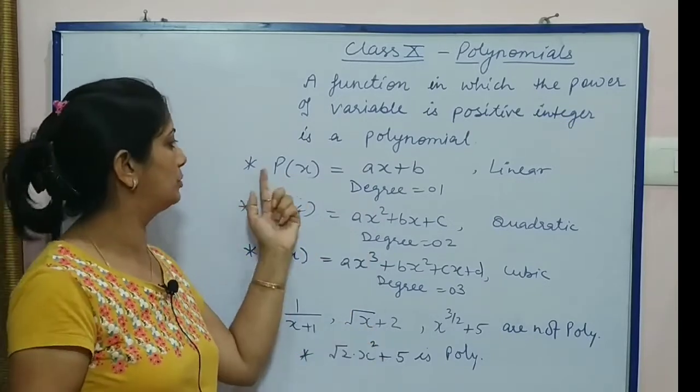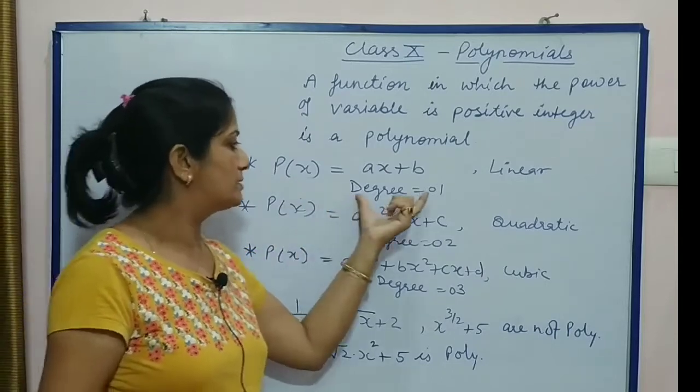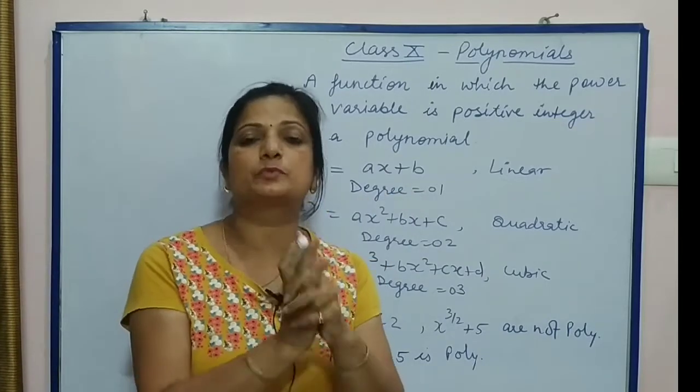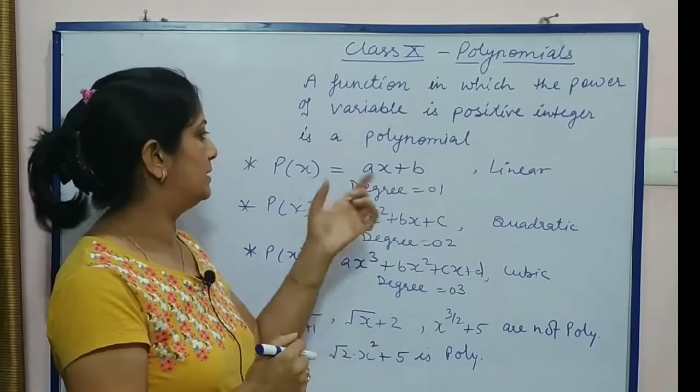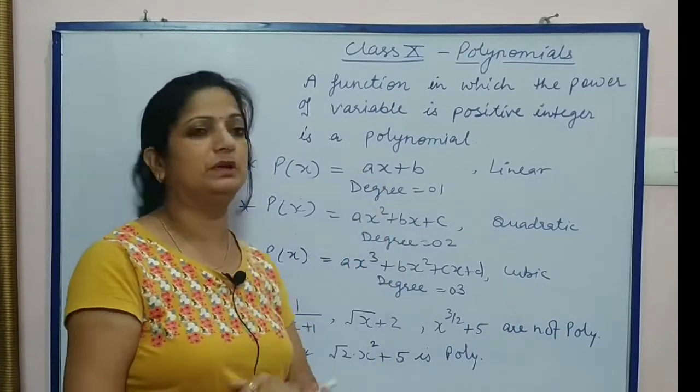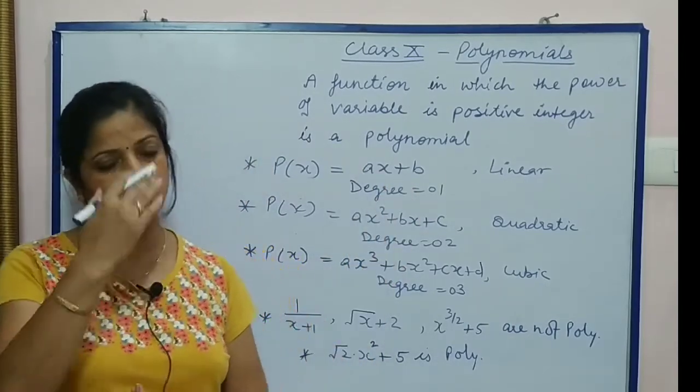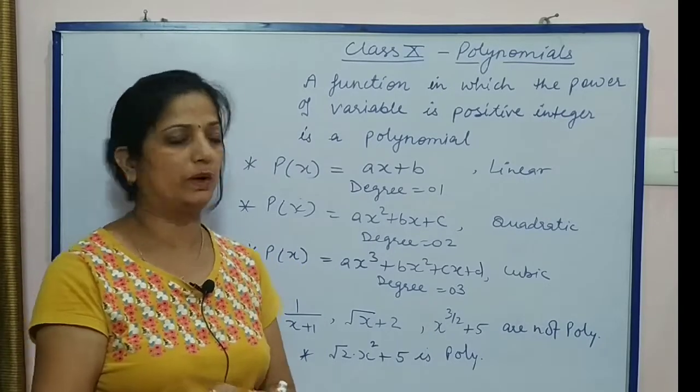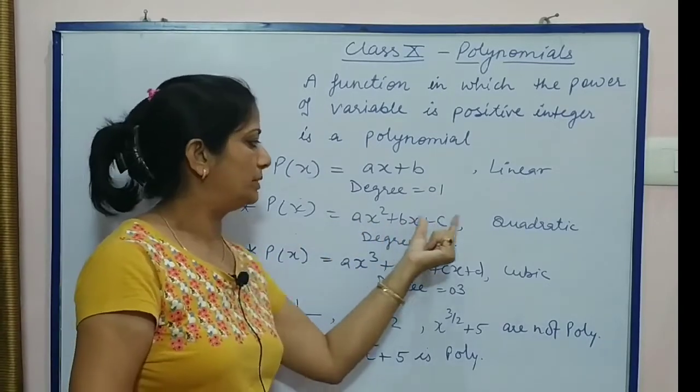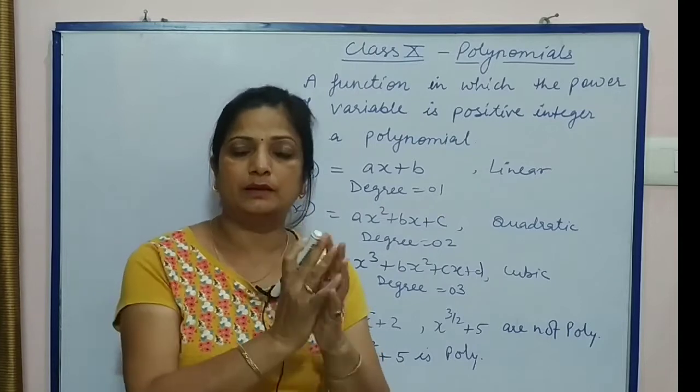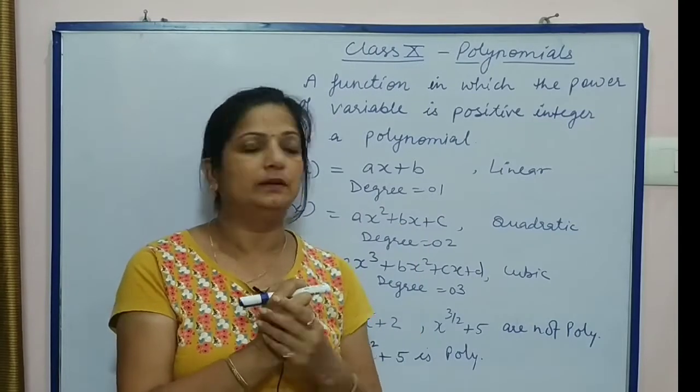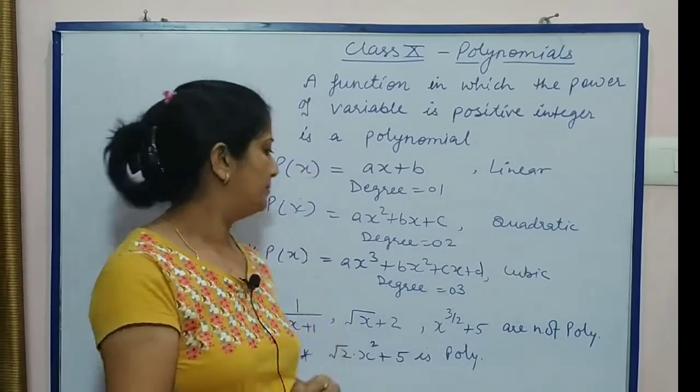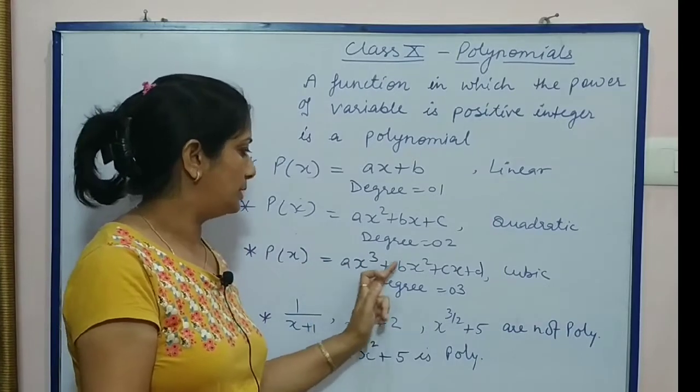What is degree? Degree is highest power of variable. For example, if we take ax + b, this is a linear polynomial because highest power of x is 1. ax² + bx + c, here degree is 2, so it is a quadratic polynomial.